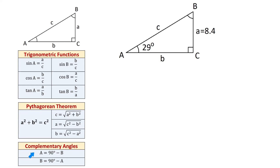The last two formulas are: angle A equals 90 degrees minus angle B, and angle B equals 90 degrees minus angle A. In any triangle the sum of all three angles is 180 degrees, and in a right triangle one angle is 90 degrees. Therefore the sum of the other two angles is also 90 degrees. So if we know angle B, we can find angle A by subtracting angle B from 90 degrees, and if we know angle A, we can find angle B by subtracting angle A from 90 degrees.